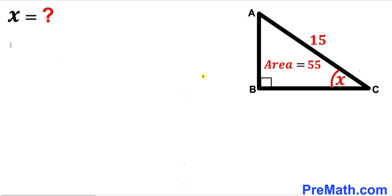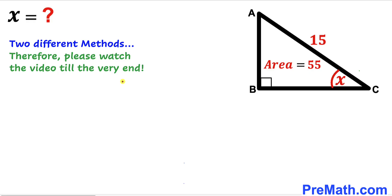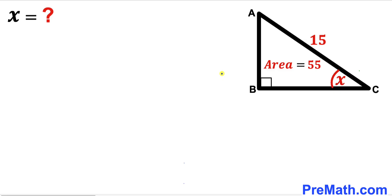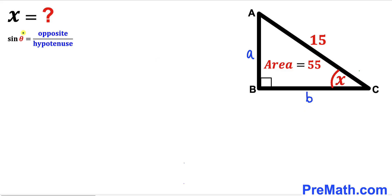I'm going to share two different approaches, so please watch the video till the very end. Here's our very first step: we know the hypotenuse of this right triangle is 15 units. I'm going to label the perpendicular of this triangle as lowercase a and the base as lowercase b. Now let's recall the trigonometric ratio: sine of theta equals opposite divided by hypotenuse. For angle X, this side is going to be our opposite side and this side is going to be our hypotenuse.